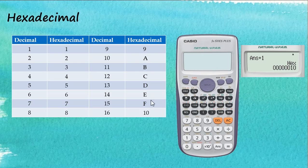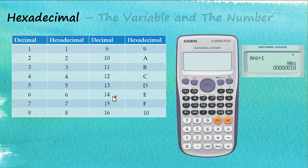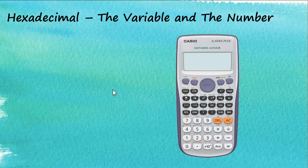So these are the numbers and letters used in hexadecimal. We use A through F to represent 10 through 15. That's hexadecimal. Now, previously we learned that our calculator can store variables, and those variables are stored using buttons with capital letters shown in red.